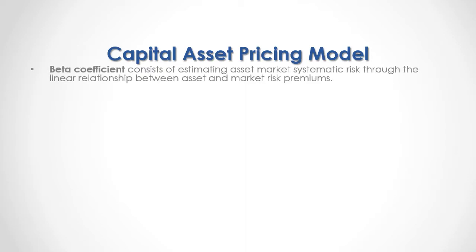The beta coefficient consists of estimating asset market systematic risk through the linear relationship between asset and market risk premiums. As a formula, the asset beta coefficient is equal to the covariance between asset and market risk premiums in the numerator, divided by the variance of the market risk premium in the denominator.